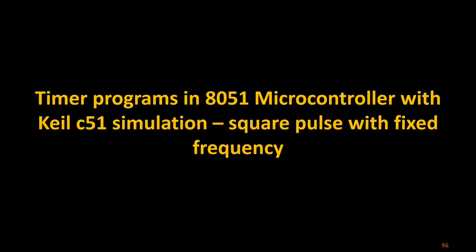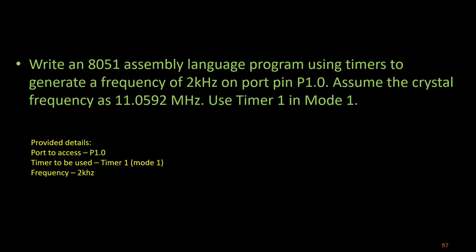In this video we are going to see the next program on timers. In the first video, a random square pulse was generated with unknown frequency. In the next program, a fixed delay was created. Now the question given to us is: write an 8051 assembly language program using timers to generate a frequency of 2 kilohertz on Port 1.0. Assume the crystal frequency is 11.0592 MHz.